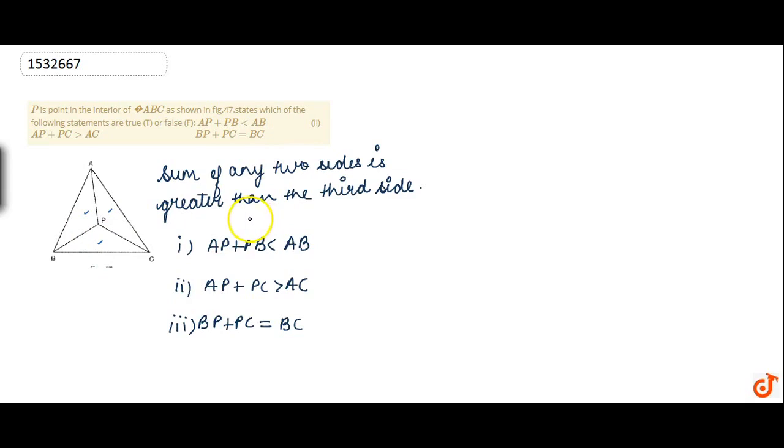In these inequalities, we will use the property of the triangle that states that the sum of two sides is always greater than the third side. So first, we have an inequality that AP plus PB is less than AB.